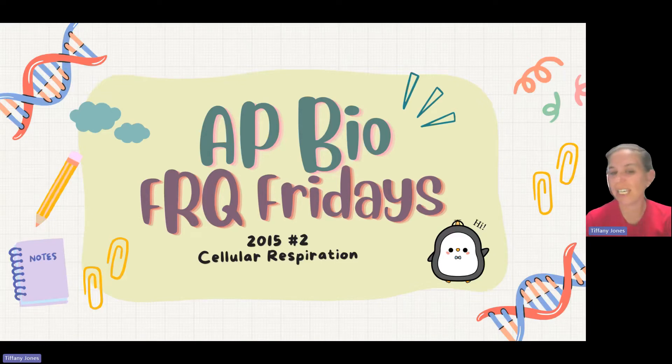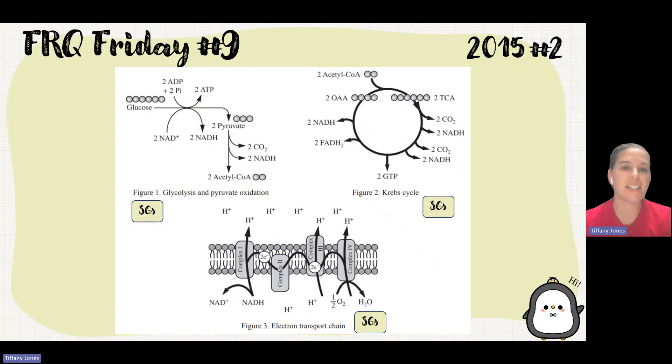Today we're going to do question number two from the 2015 exam, and it has to do with cellular respiration. They've given us this diagram showing glycolysis, the Krebs cycle, and what goes in and comes out of each.